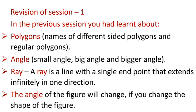An angle can be a small angle, a big angle, or a bigger angle. Now, what is a ray? A ray is a line with a single end point that extends infinitely in one direction. Lastly, you had learnt the angle of the polygon will change if you change the shape of the polygon.